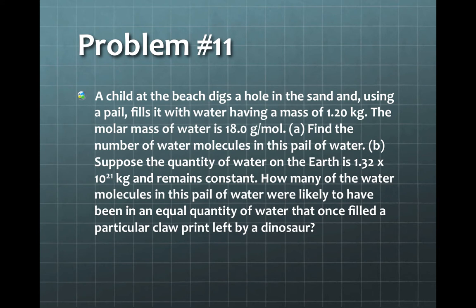We're supposed to find the number of water molecules in this pail of water. Assuming that the water molecules have not changed since the time of the dinosaurs, we determine how many molecules in the current pail of water likely have been in an equal quantity of water that once filled a particular paw print or claw print left by a dinosaur.